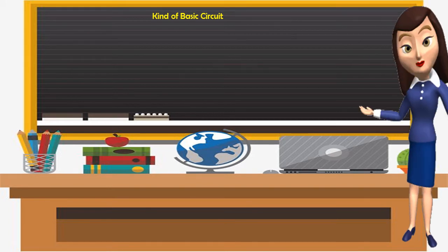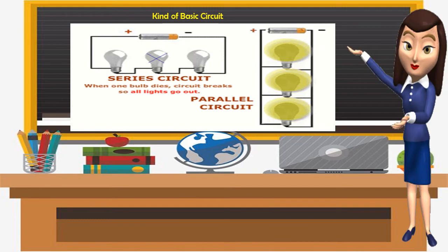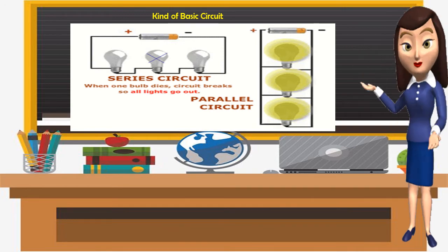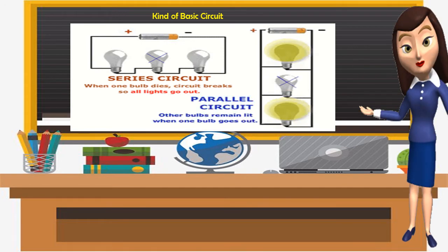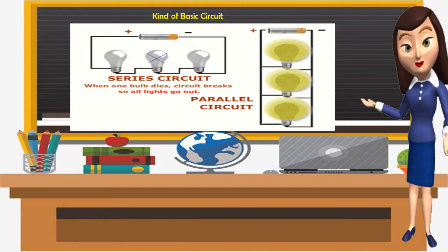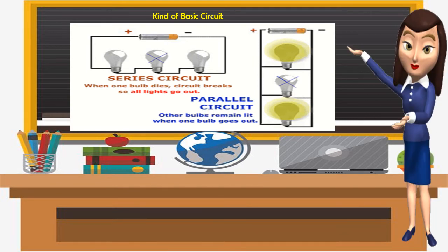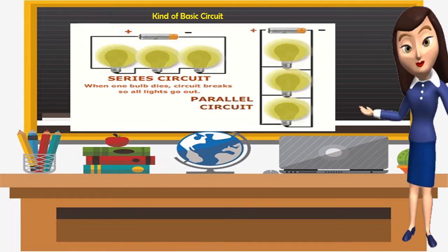Here are the kinds of basic circuit. As you can see on the illustration, in a series circuit, when a bulb dies, the circuit breaks so all lights go out. While in a parallel circuit, the other bulbs remain lit when one bulb goes out.